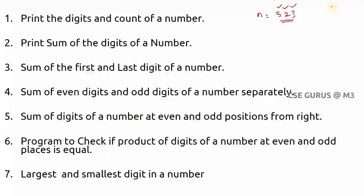To print digits from the right side, we need to get each digit's position. To get the digit in the one's position of any number, divide the number by 10 and take the remainder. For example, 523 % 10 gives remainder 3. Similarly, 28 % 10 gives 8. So when you divide any number by 10, the remainder is the last digit.